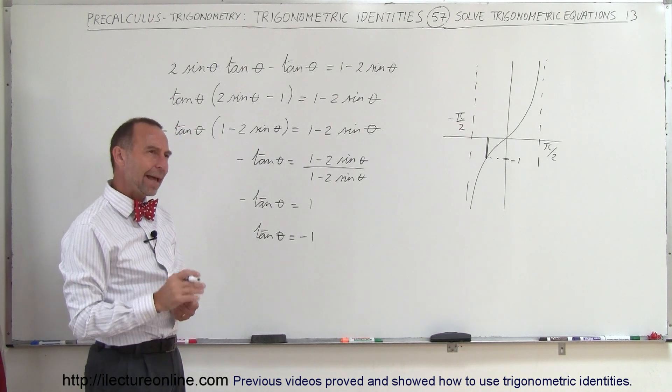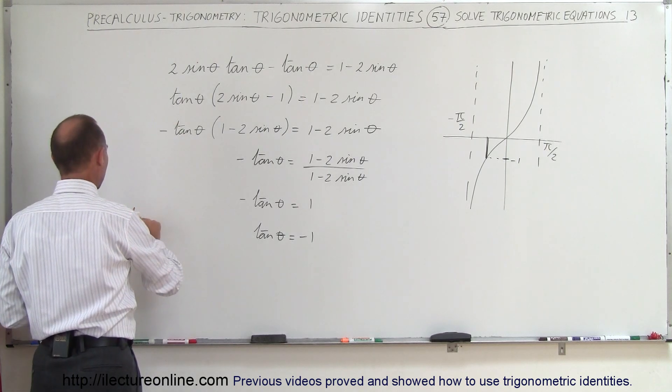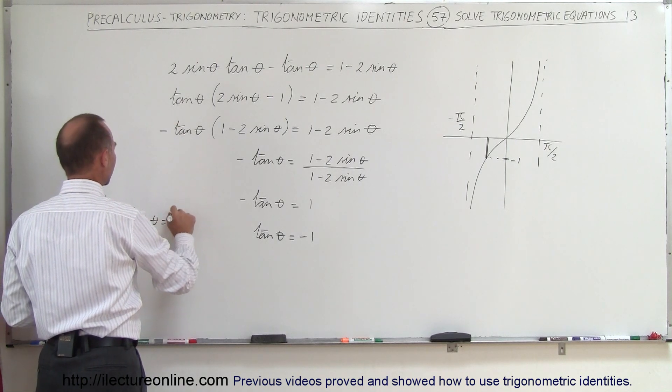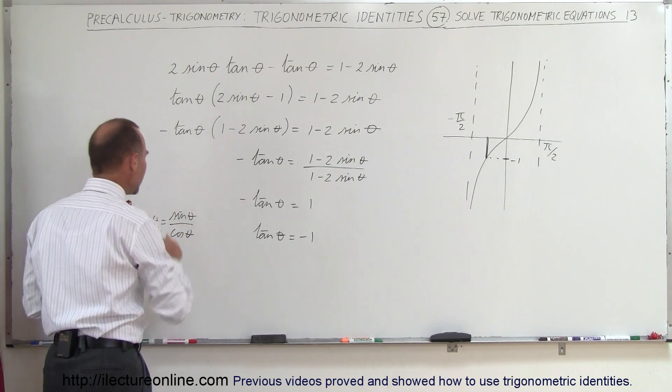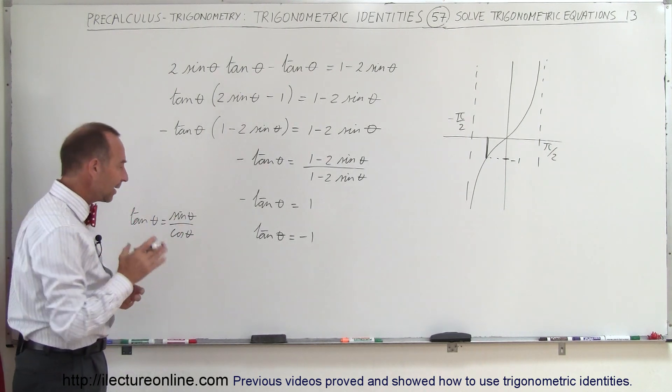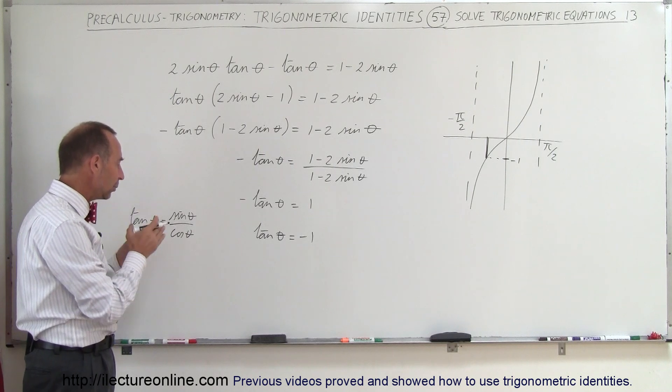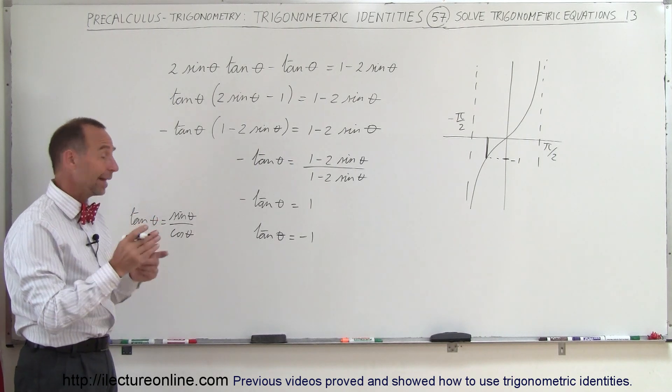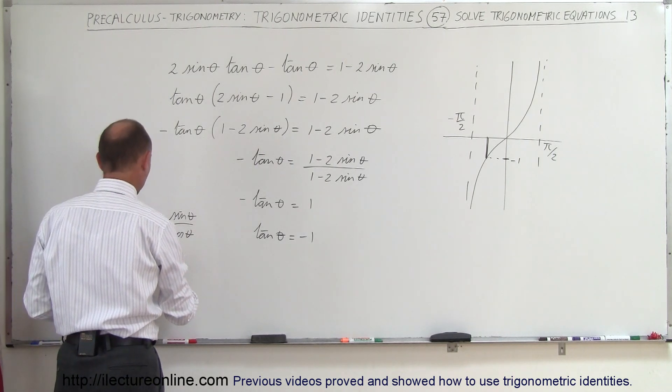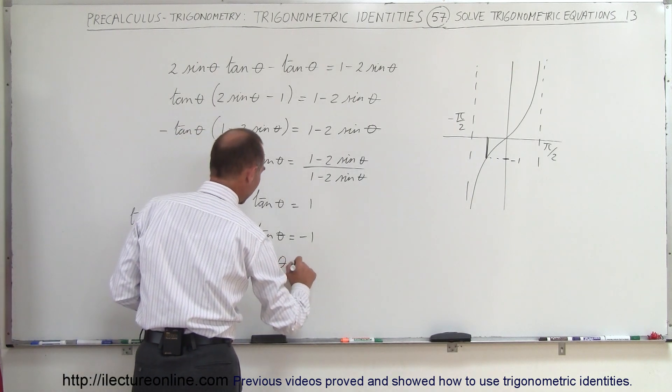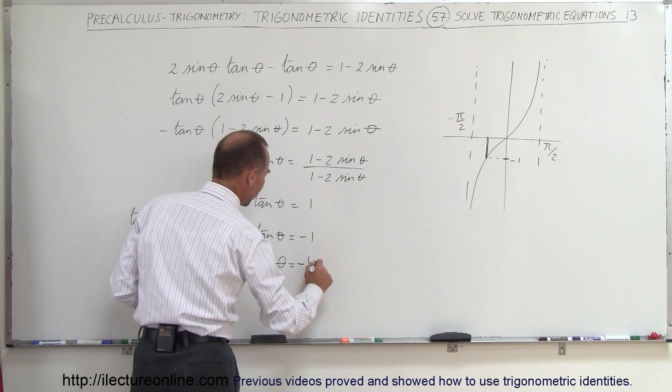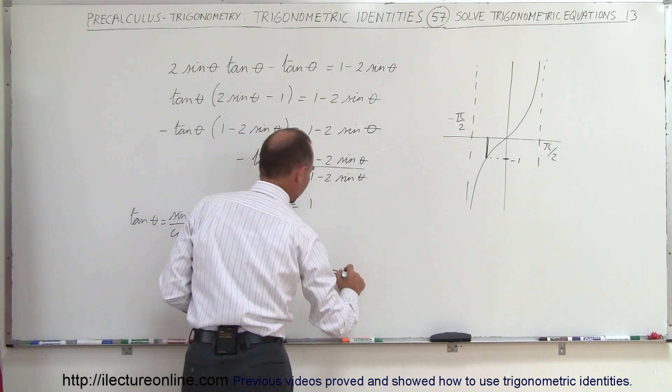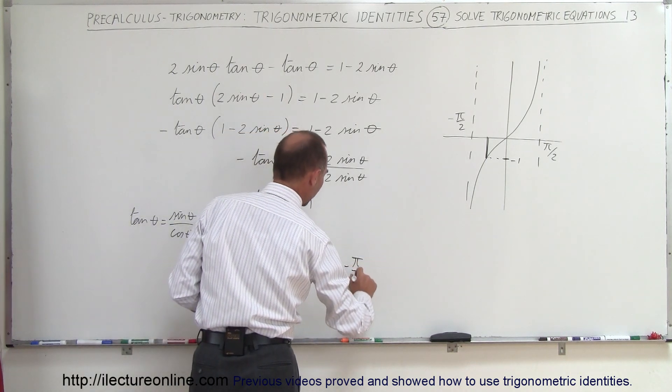Then I remember the definition: tangent of theta equals sine of theta divided by cosine of theta, which means that the sine and the cosine are equal to each other when the tangent is equal to 1. That happens at 45 degrees, so therefore theta equals 45 degrees. But since we're looking for negative 1, it's minus 45 degrees, which equals minus pi over 4.